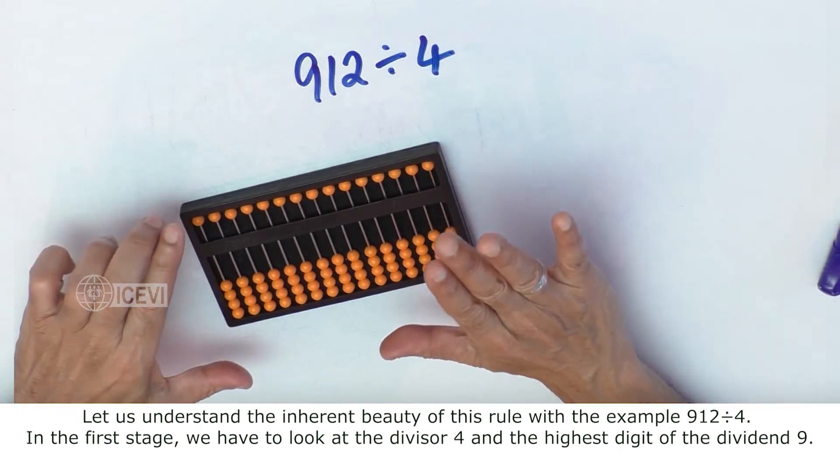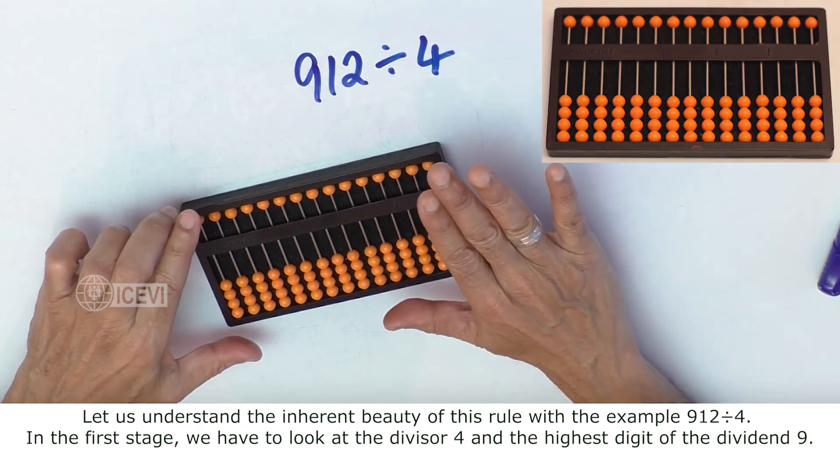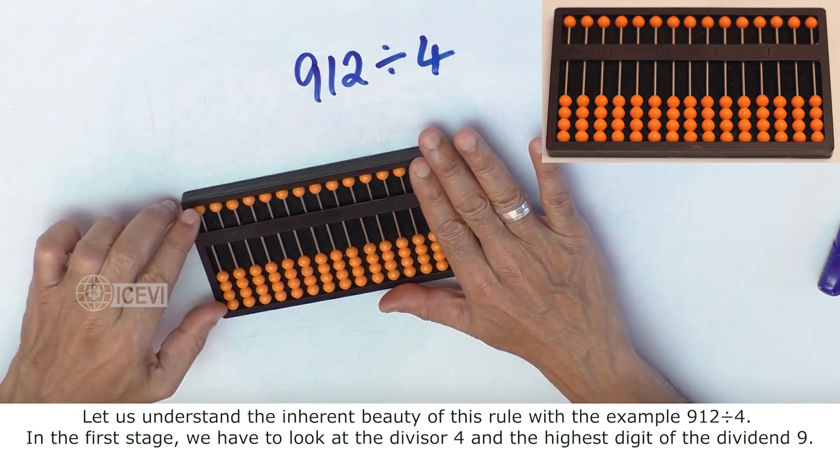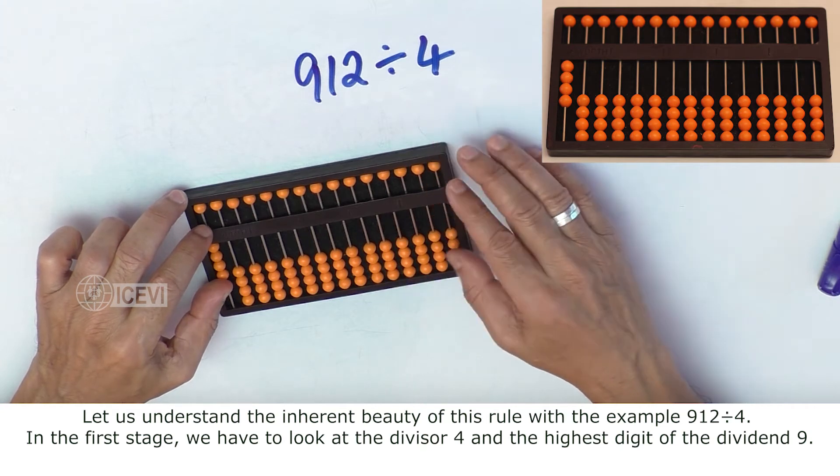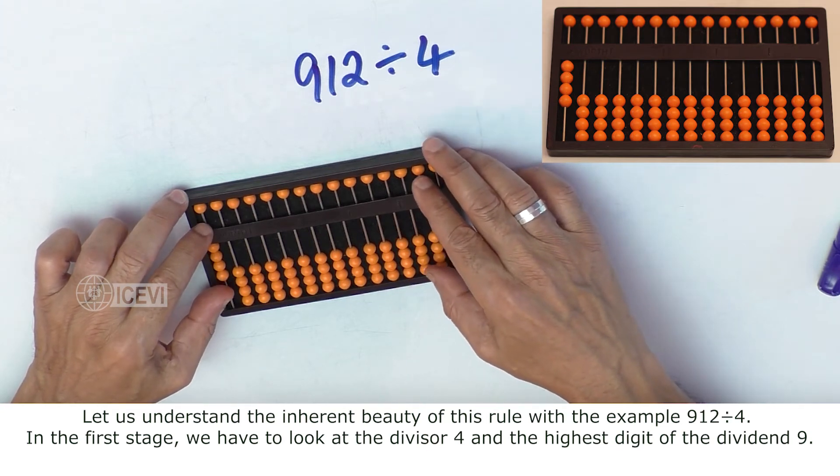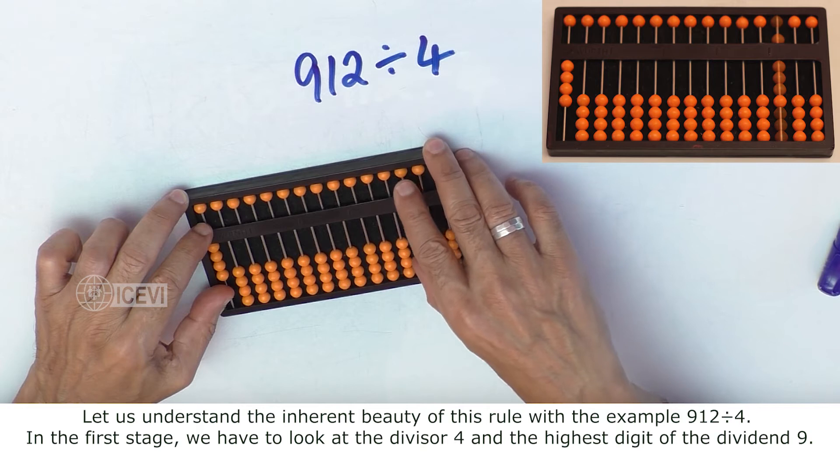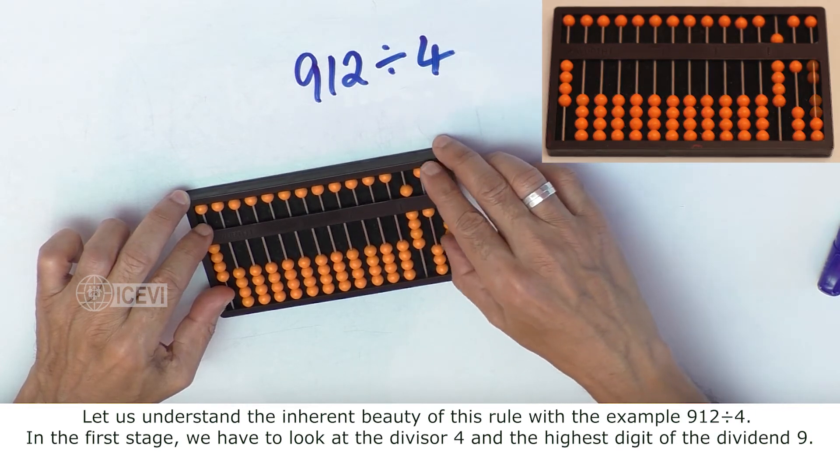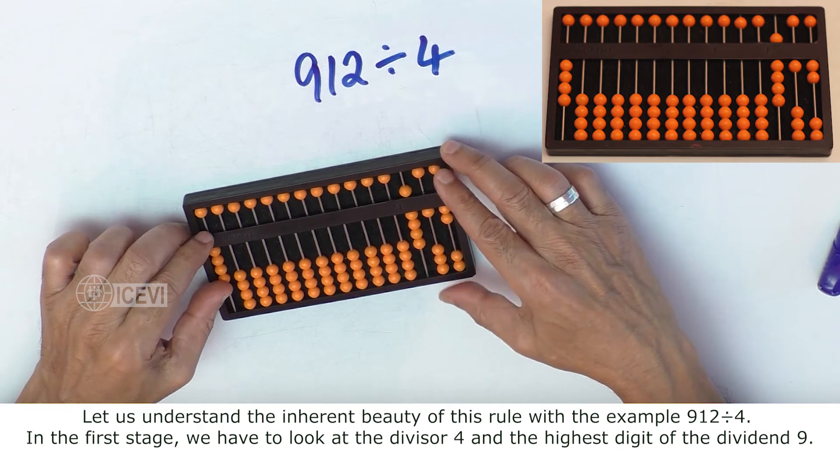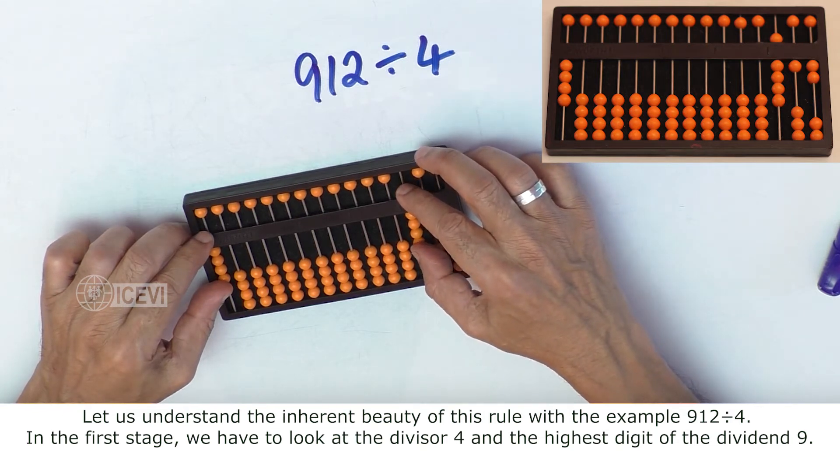In the first stage we have to look at the divisor. Let us set the divisor now in the extreme left and set the dividend in the extreme right. In the first stage we have to look at the divisor 4 and the highest digit of the dividend, 9.